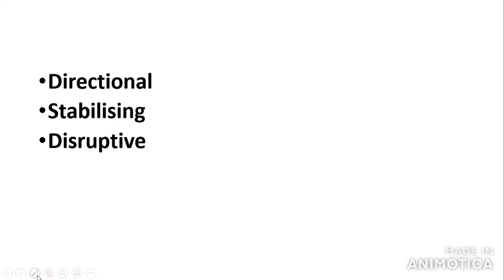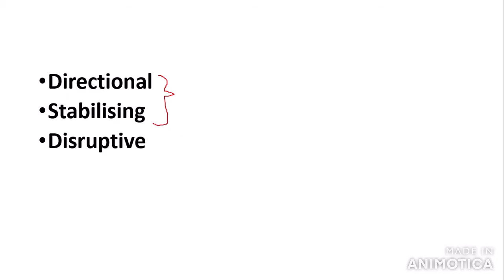There are three methods of natural selection you need to know about: directional, stabilising, and disruptive. The only ones you need to know for AS are directional and stabilising. Disruptive comes up in the A2 content.